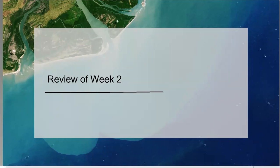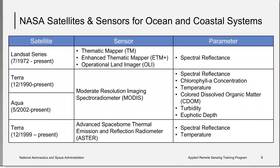So first, a review of some important concepts from last week. Recall that we presented commonly used NASA satellites and sensors for ocean and coastal systems. These next two slides provide a reference to the different satellites and sensors used for ocean color remote sensing. The Landsat series, including the Thematic Mapper, Enhanced Thematic Mapper, and Operational Land Imager, are used to observe water quality. These sensors provide high spatial resolution, which is particularly valuable in coastal systems where small-scale processes can dominate.